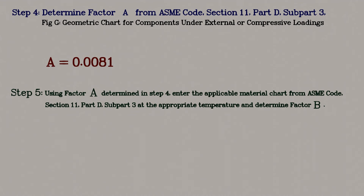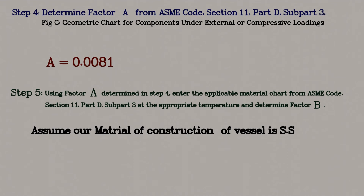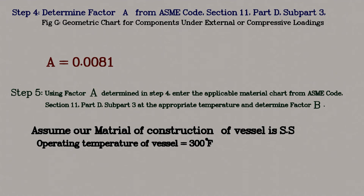In step 5, we calculate the value of B. To do this, we need the material of construction, the operating temperature, and factor A. Assuming the material of construction is stainless steel and the operating temperature is 300°F, using these data we find B = 11,800.